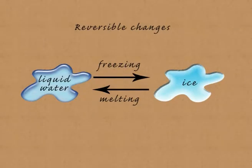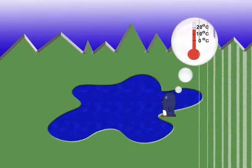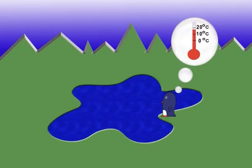Similarly, freezing and melting are reversible changes. If we cool liquid water down below zero degrees Celsius, it freezes into solid ice. By raising the temperature above zero, the ice melts to form liquid water again.